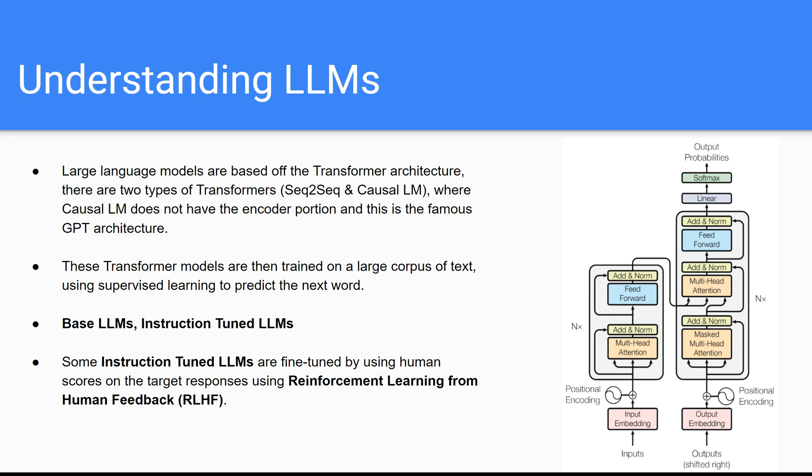What you see right here in this picture is called a Seq-to-Seq, or a Sequence-to-Sequence transformer. And Sequence-to-Sequence transformers have an encoder portion, which is this side right here on the left, and a decoder portion, which is this side on the right.